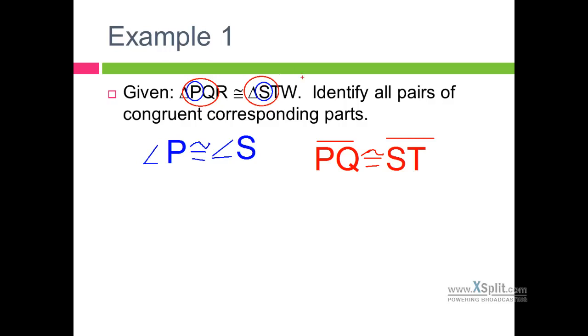You could also say things like SW. Suppose you had S and W. What would that be congruent to? Think about that for a moment. First letter, third letter. SW. It would be congruent to P and R. You could write SW and PR.